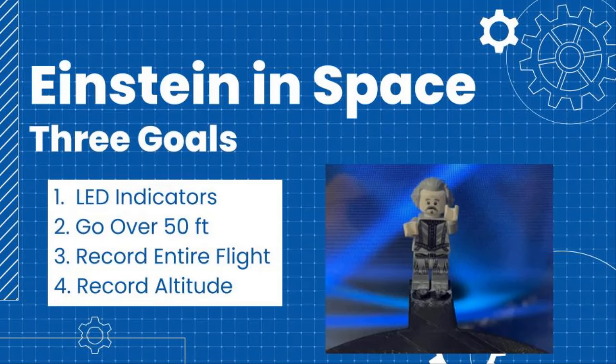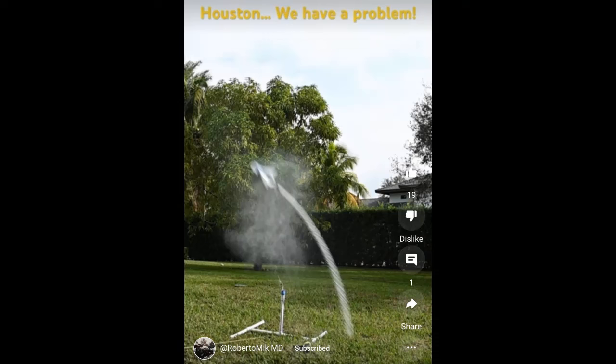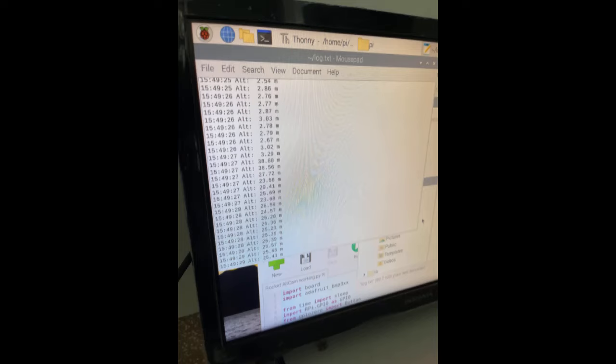The next goal was to make the rocket go over 50 feet. I believed achieving a high altitude would require a larger water bottle rocket. I mistakenly thought that I would need multiple iterations to make the rocket go straight and go as high as 50 feet. The third and fourth goals were to record all altitude and video data. With the goals set, I was off.